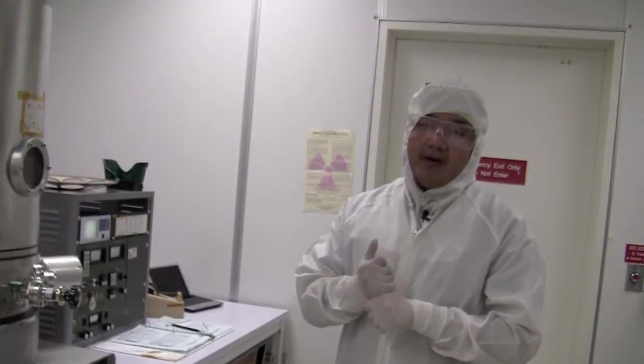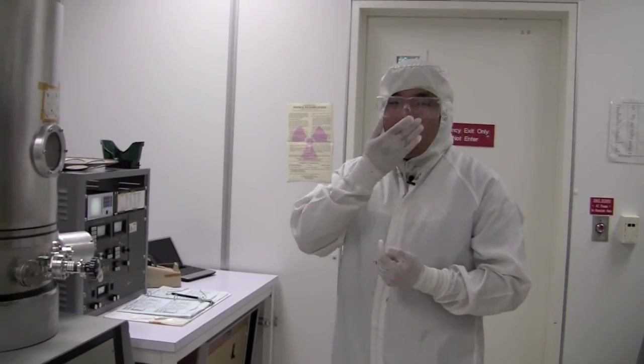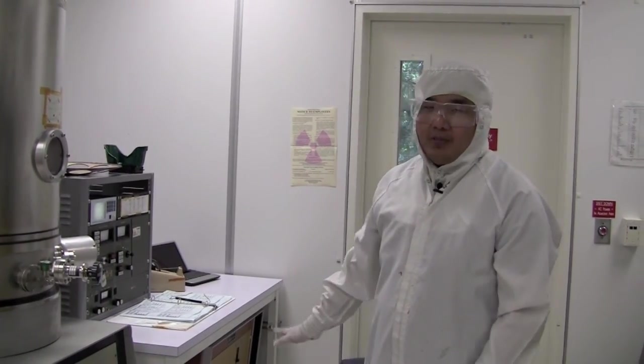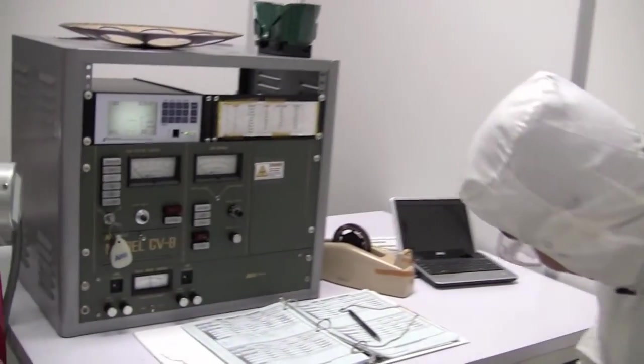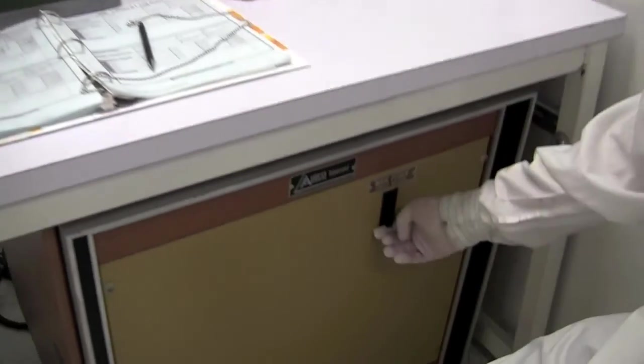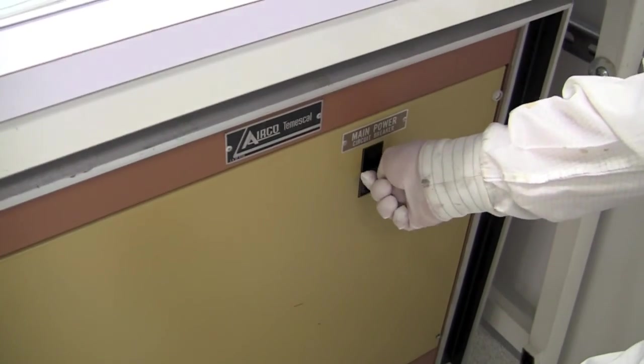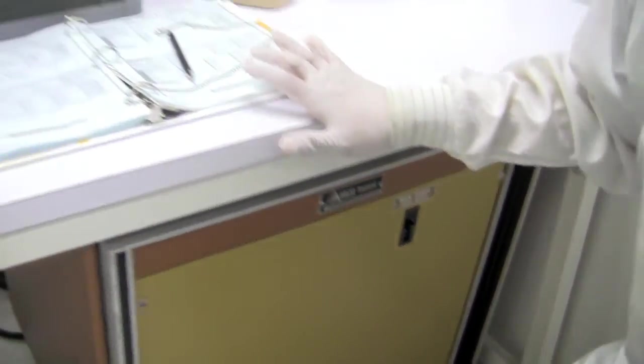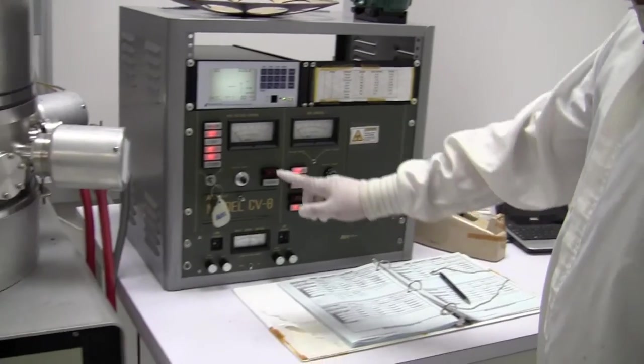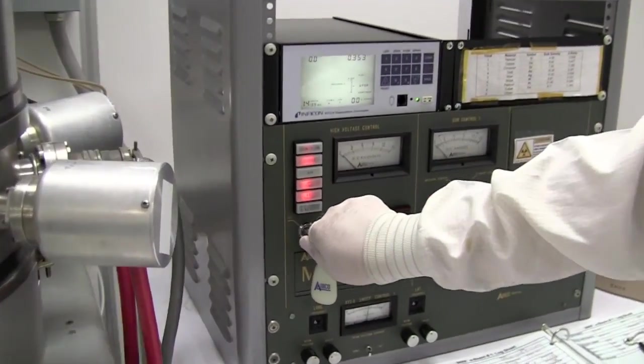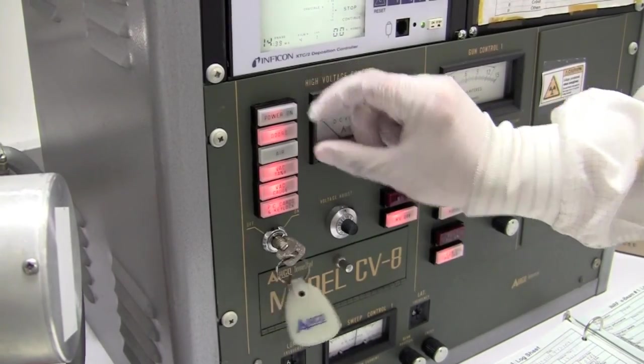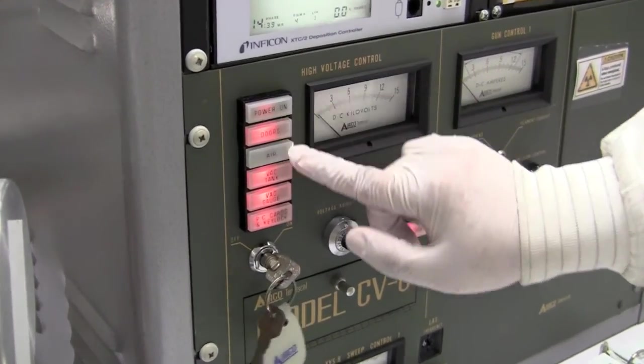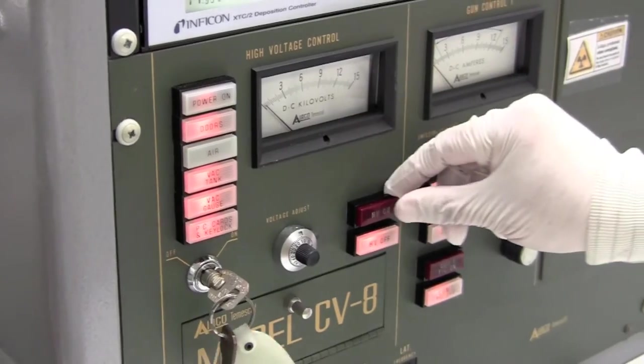So if the pressure is in the right range and now the water is turned on, you can turn the power supply on. This is the main power supply. You would turn this on, and then you would turn the key to the on position. So these would all light up. These bulbs are out right here, but it actually is lit enough. And then you would turn the high voltage on.